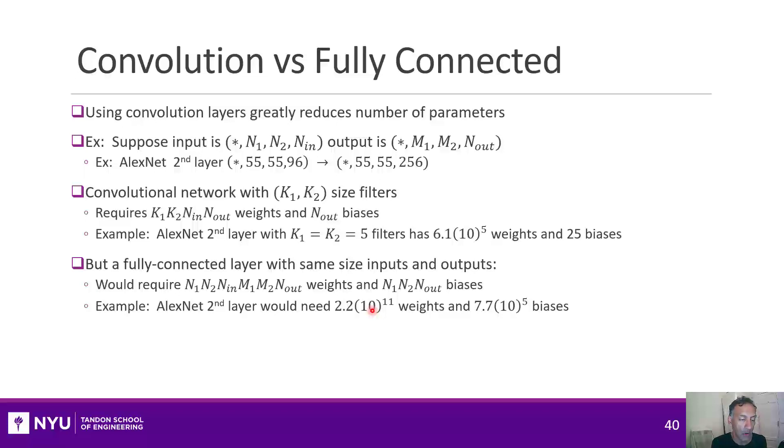So even though, in principle, every convolutional layer could be represented as a fully connected layer, the convolutional layer is much more efficient in terms of the number of parameters. And it's essentially exploiting this translational invariance. The translational invariance is that it's trying to pick up the same feature throughout the whole image.